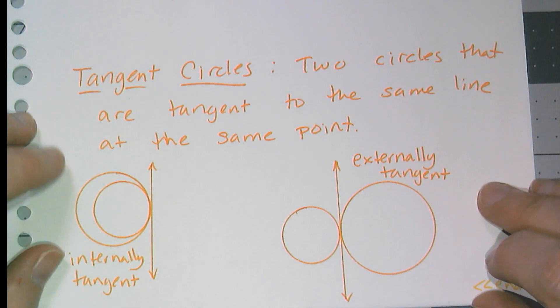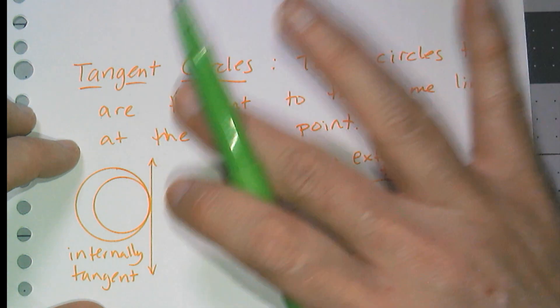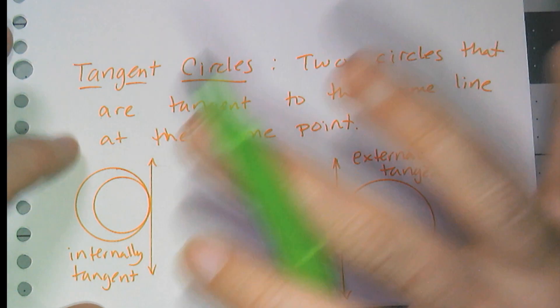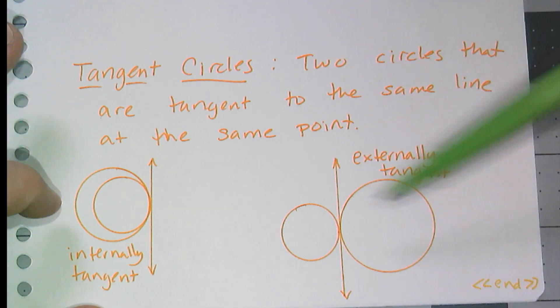Now I'm going to throw a little note in here about tangent circles. Since we're talking about tangents, we'll talk about tangent circles. Tangent circles are merely just two circles that are tangent to the same line at the exact same point. And there are two ways this can happen. So when we talk about tangent circles and I don't give you any more information, you have to visualize these two scenarios.